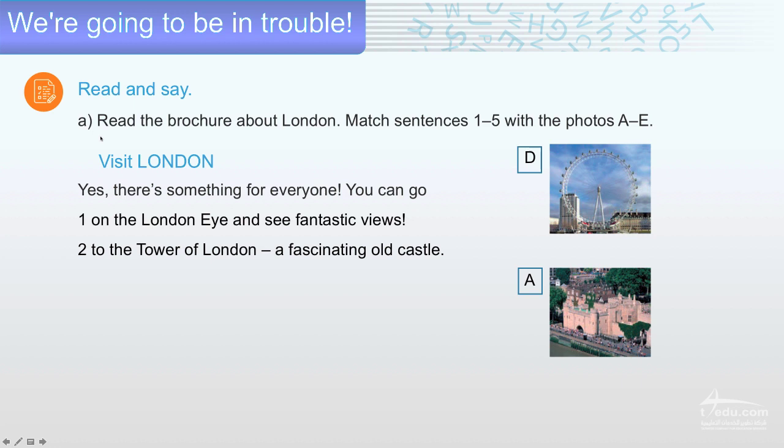Read and say. Read a brochure about London. Match sentences 1 to 5 with the photos A to E. Visit London. Yes, there's something for everyone. You can go on the London Eye and see fantastic views. To the Tower of London, a fascinating, wonderful old castle.